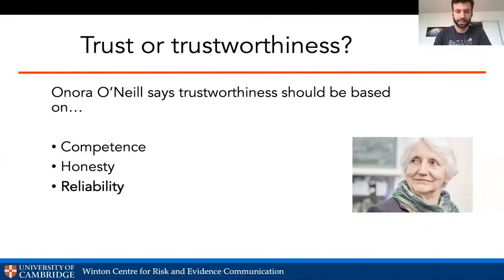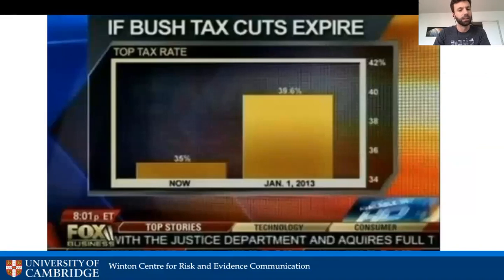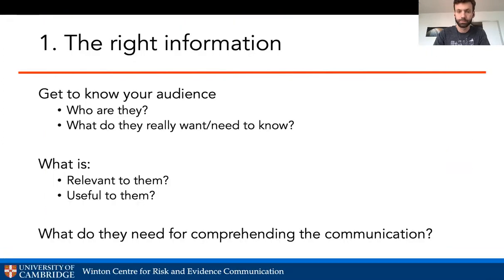O'Neill also highlighted that in addition to accuracy and honesty, you have to communicate consistently over time — you have to be reliable. For example, if we look at a news source and have a public conversation about accuracy, then go back later and find they're doing the same trick over and over again, that's not reliable.